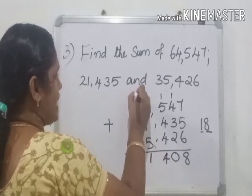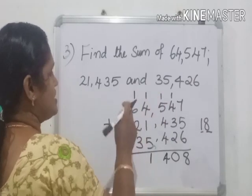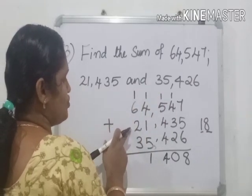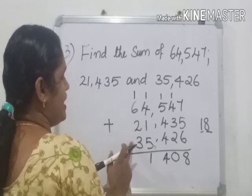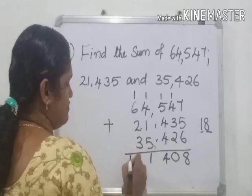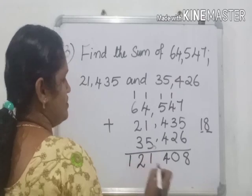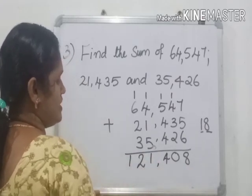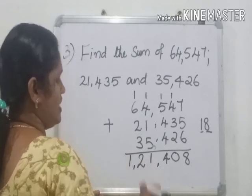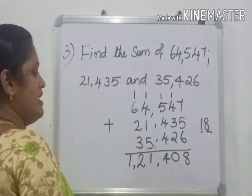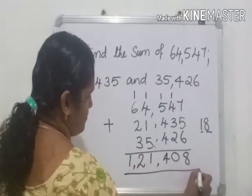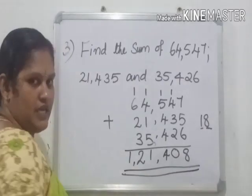Next, 1 plus 6 is 7, 7 plus 2 is 9, 9 plus 3 is 12. Here we have to insert commas like this. 1,21,408 is the sum. Clear?